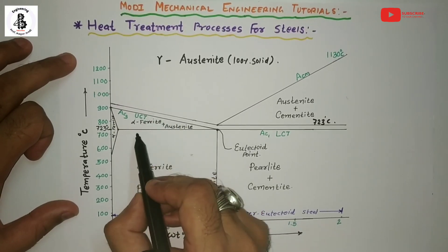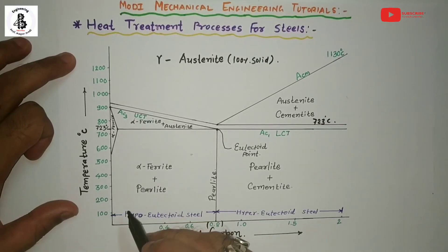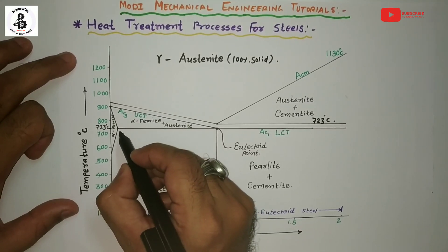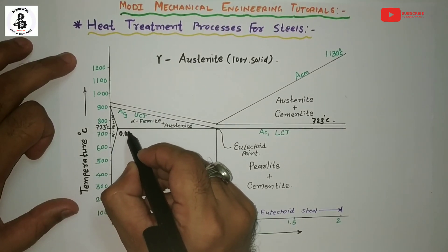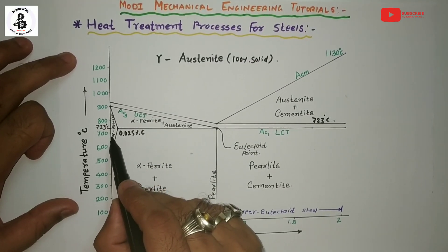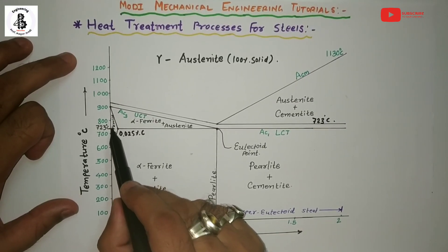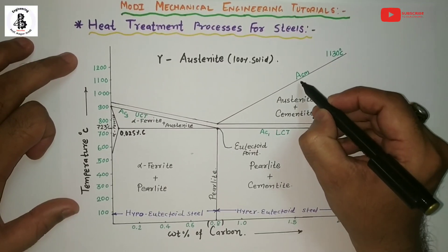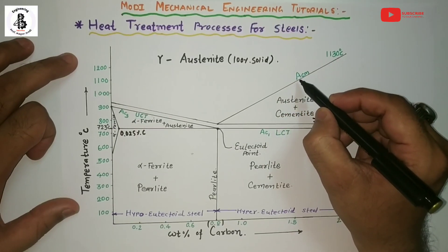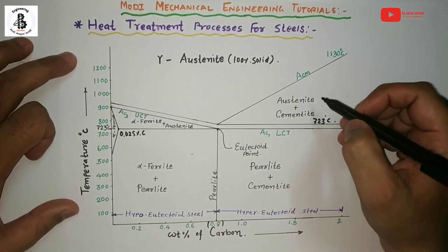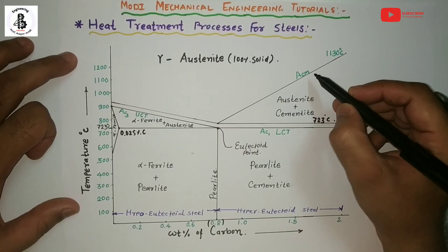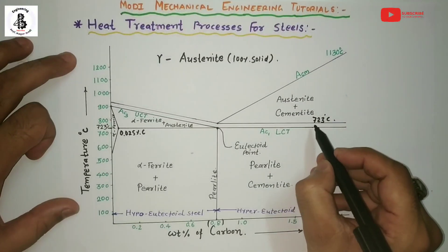After this, austenite will be converting into the alpha ferrite phase. According to the solubility of ferrite with carbon at higher temperature, there will be the point of 0.025% carbon having 100% solubility to make a single solid phase — that will be known as alpha ferrite. One more is the ACM temperature line. At this temperature line, gamma austenite will start converting into the cementite phase, at around 1130°C.